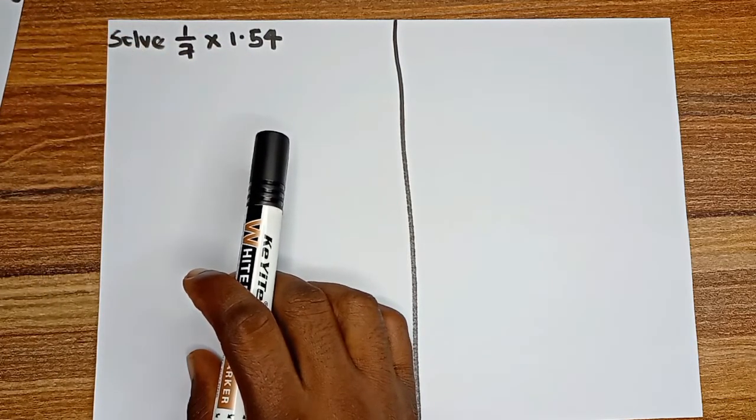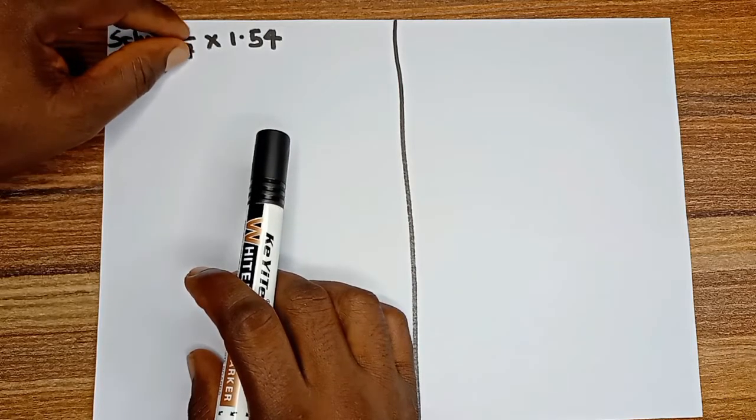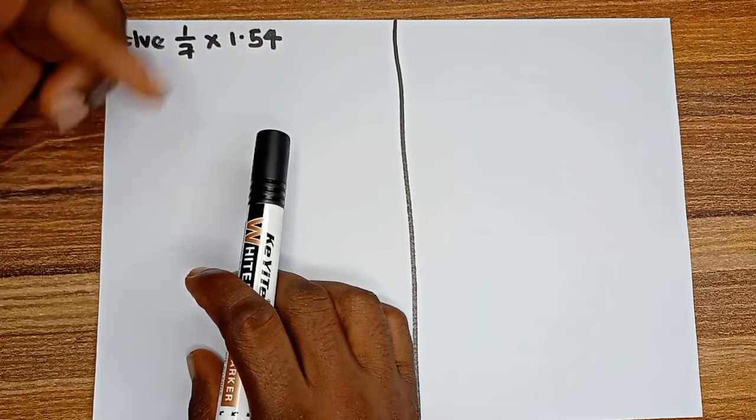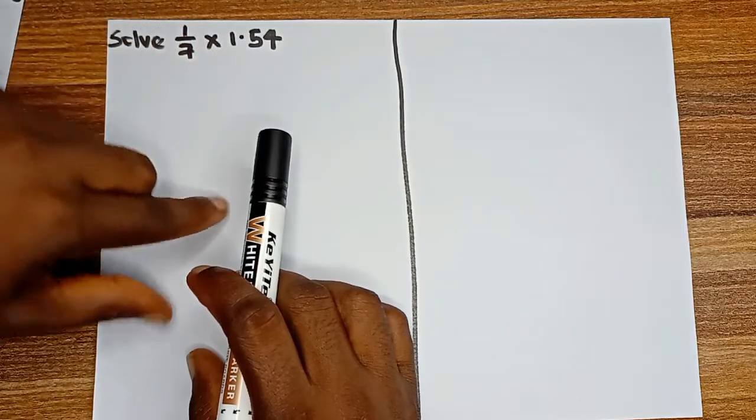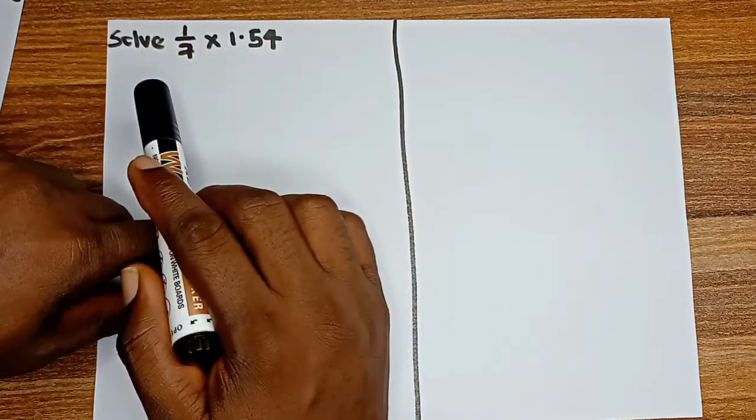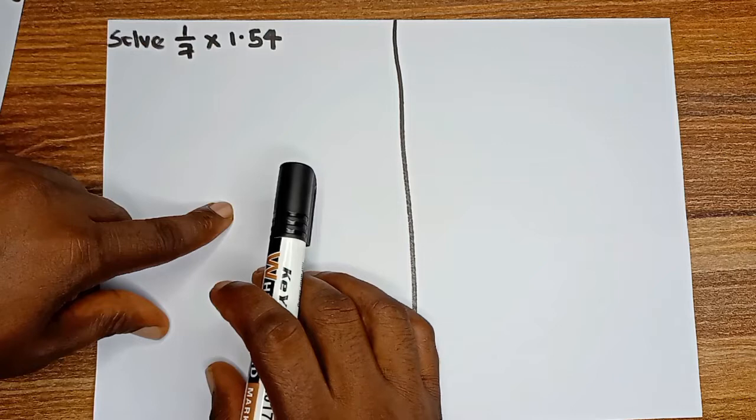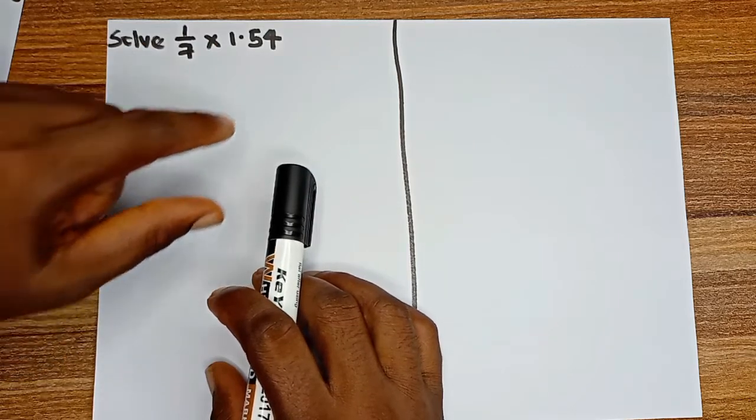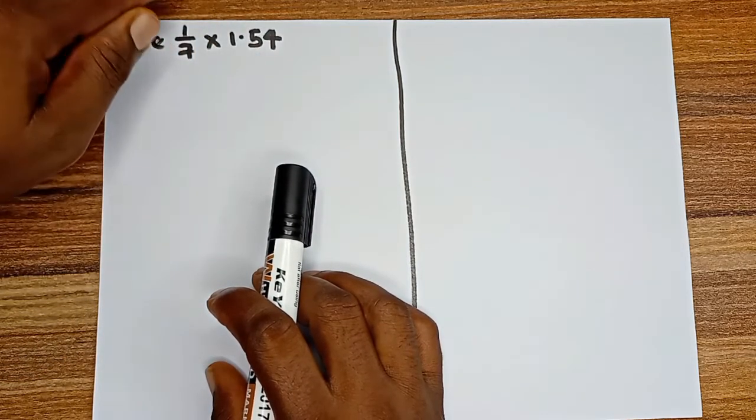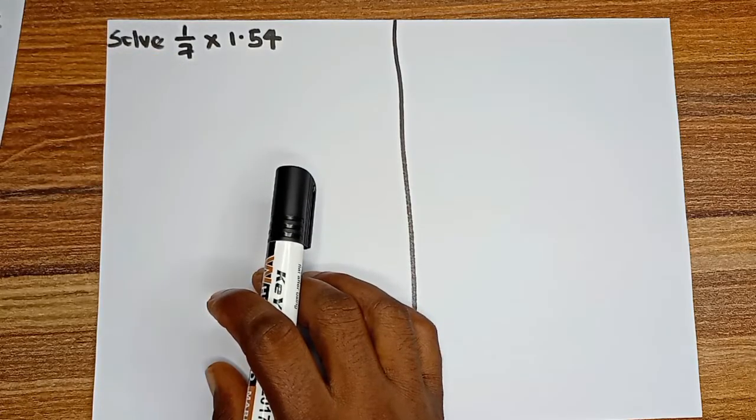So for us to solve this successfully, we either convert this fraction to a decimal before multiplying or we convert the decimal to a fraction before multiplying. In this particular video, we are going to convert this decimal to a fraction and then we multiply.